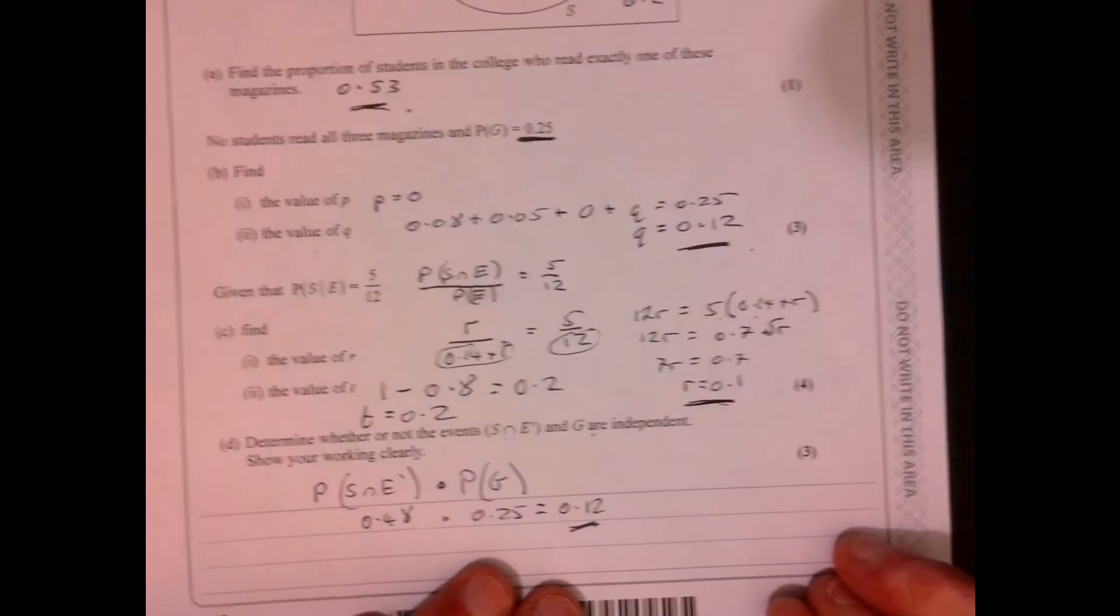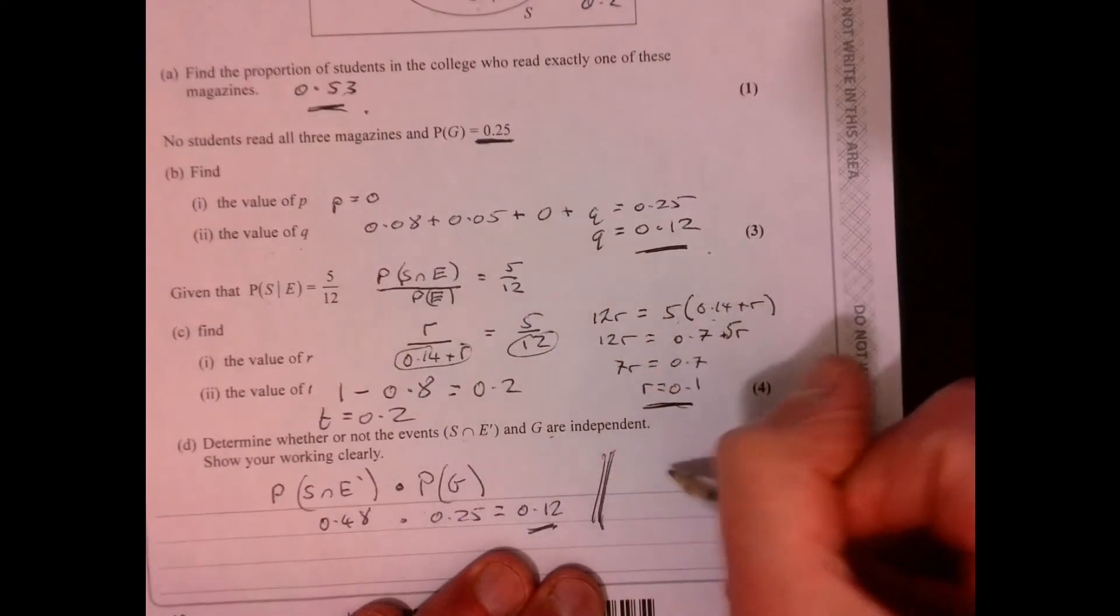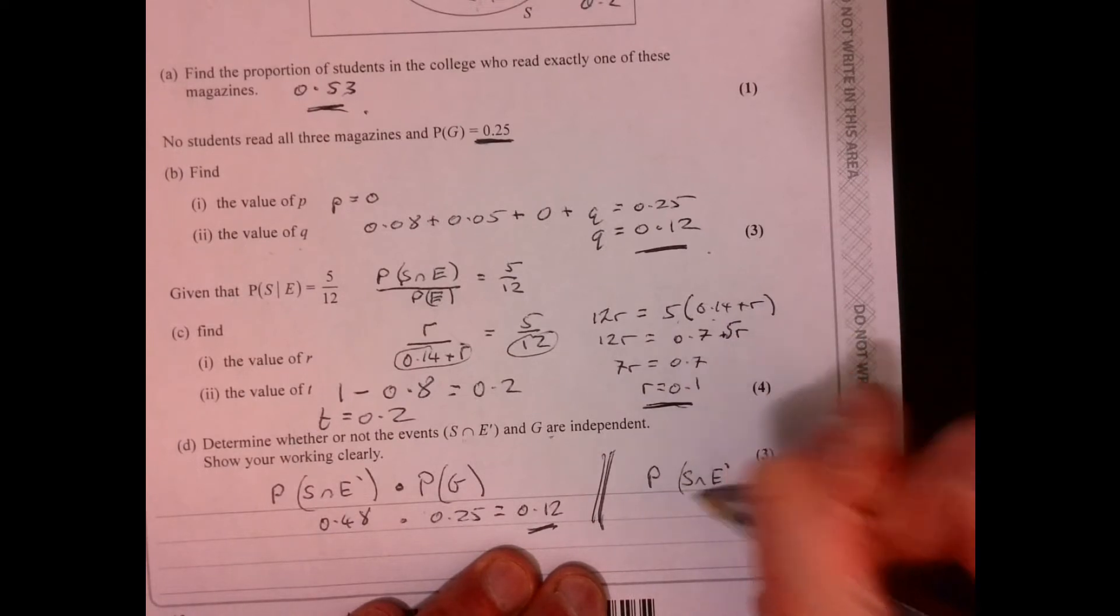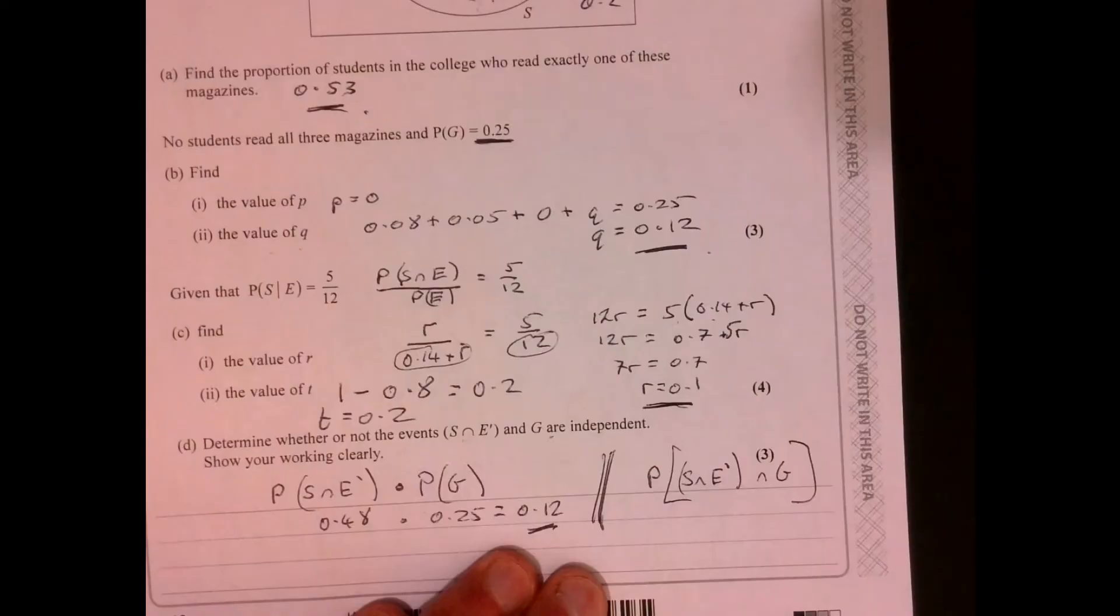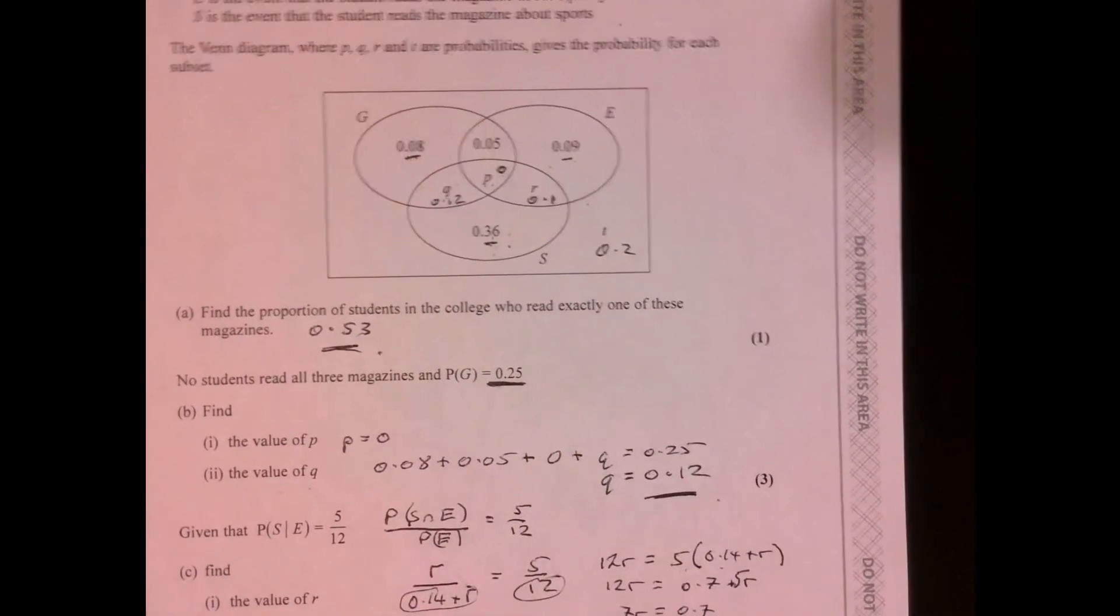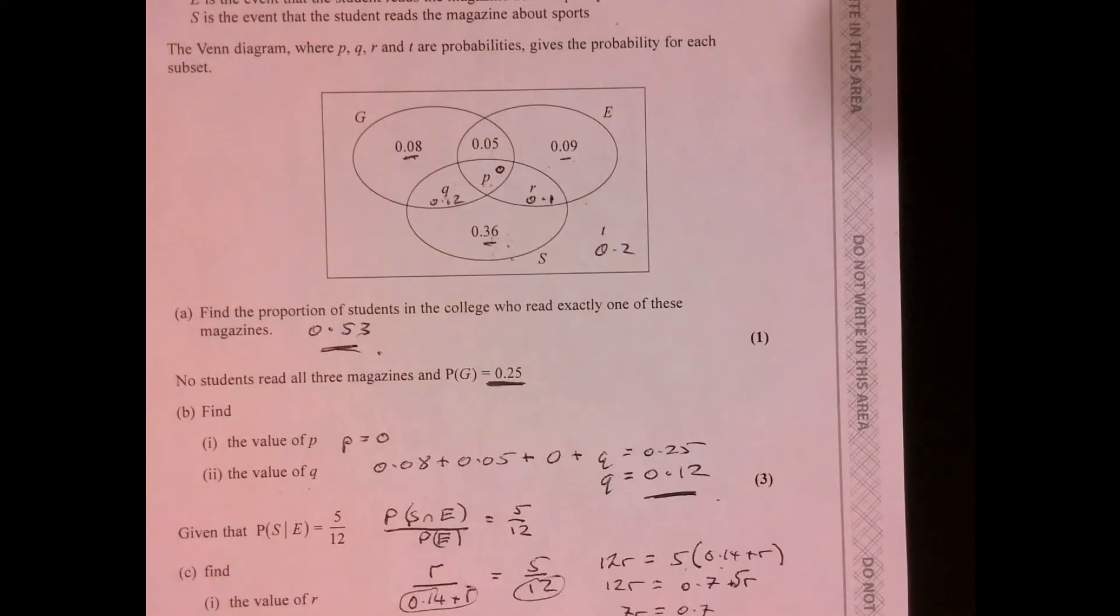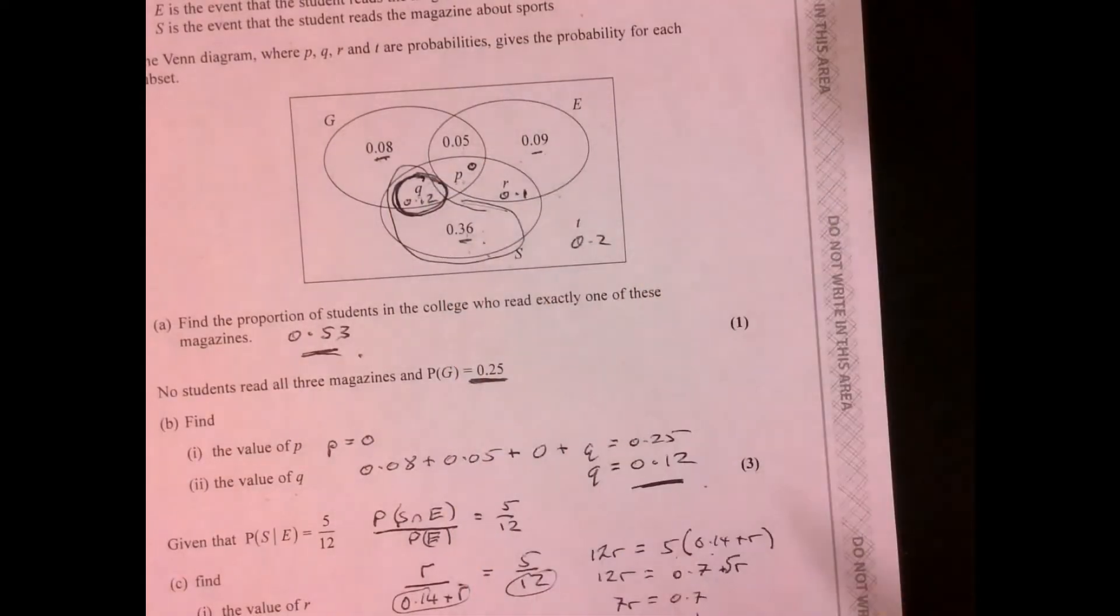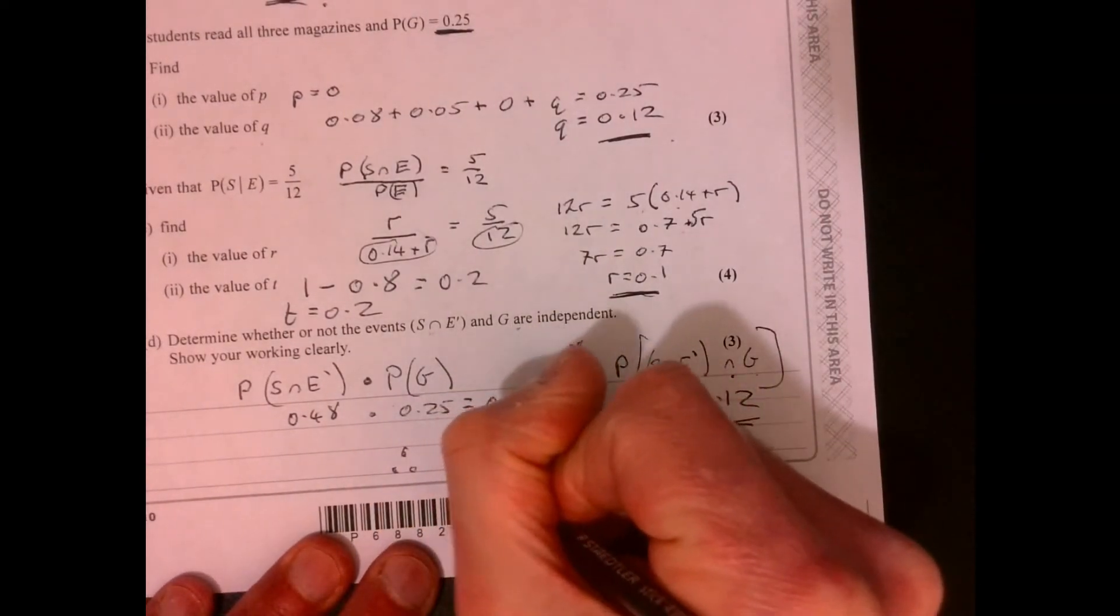Now, in order to test for independence, what we're trying to show is whether this is going to be the same by looking at the diagram. What we're interested in is just from looking at the diagram, will this give us the same answer? So we're effectively just looking for that bit just there. So if we look at the diagram, so S intersection not E. So S intersection, we've got that bit there. And then intersection G. So where does this, this bit here, and that intersects with G. We're talking about that bit just there, which is 0.12. So as they're the same, therefore independent.